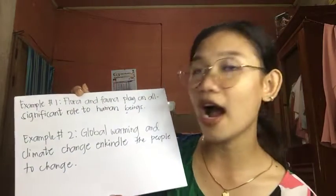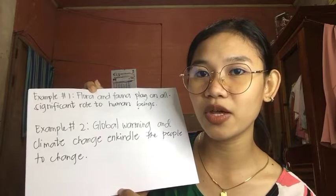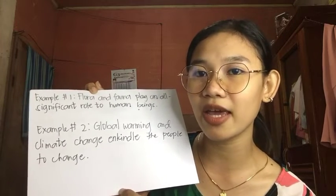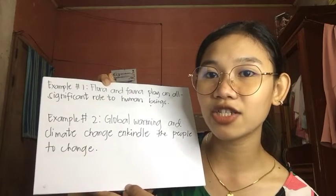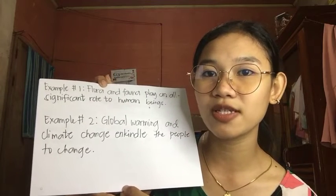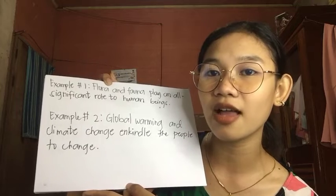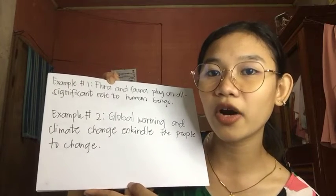Rule number six: as a general rule, use a plural verb with two or more different subjects when they are connected by 'and' to show two different subjects in a sentence. The subject is usually introduced by a possessive pronoun — a pronoun used to express ownership or possession, such as mine, yours, hers, theirs. For example, 'Flora and fauna play a significant role to human beings.' Second: 'Global warming and climate change compel the people to change.'